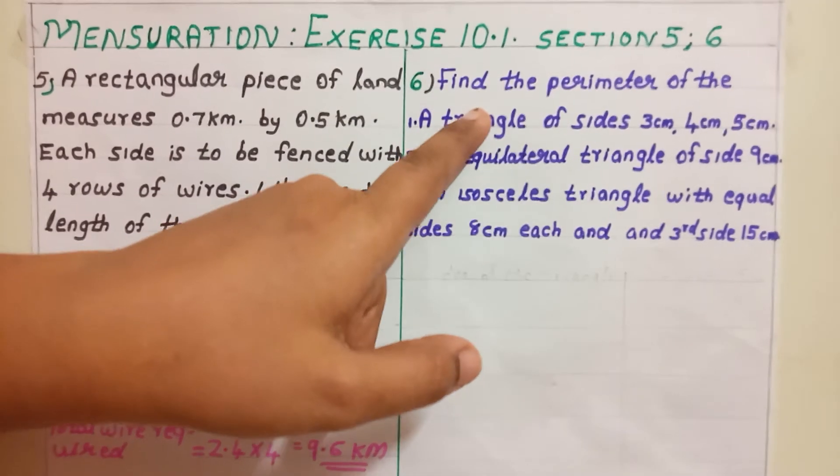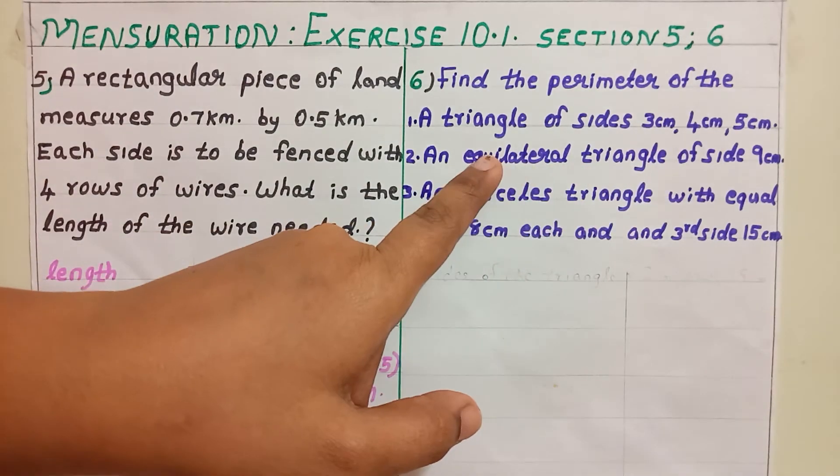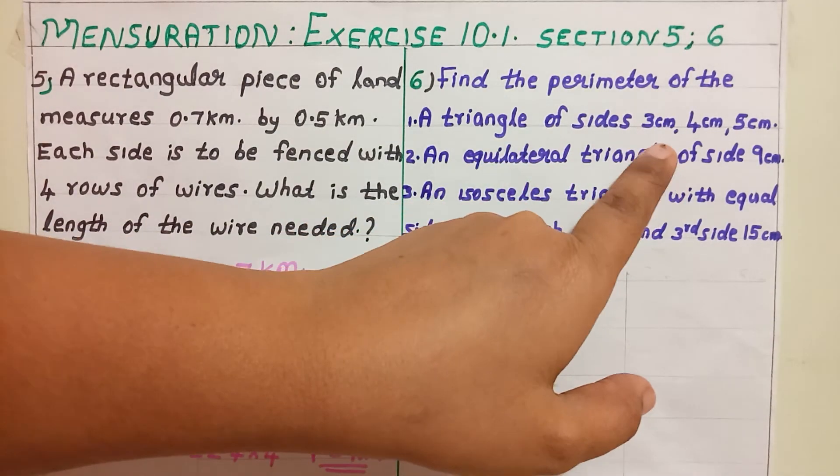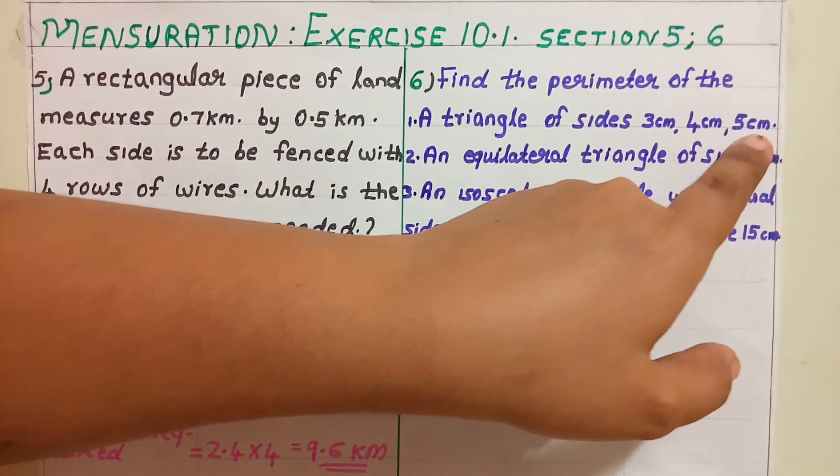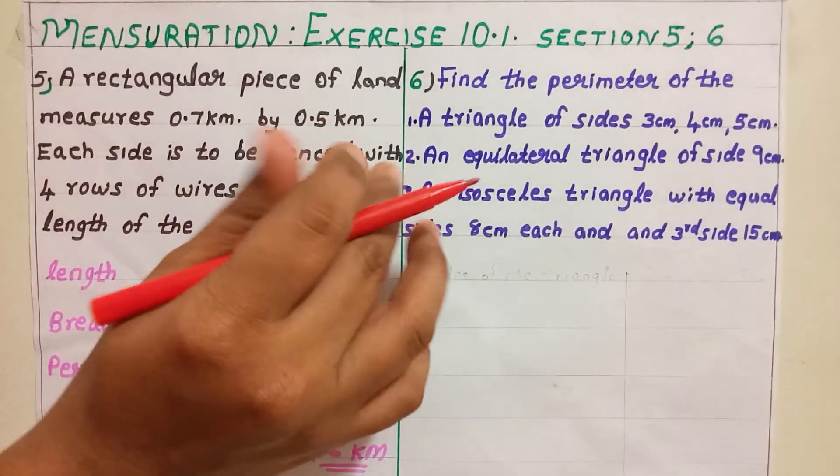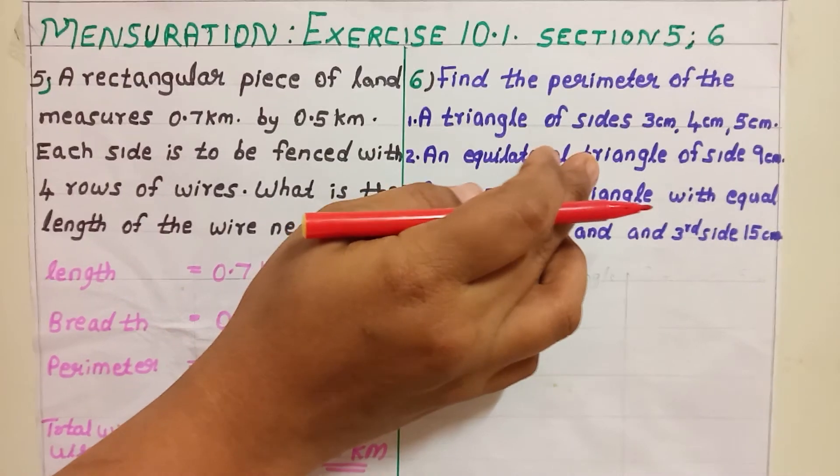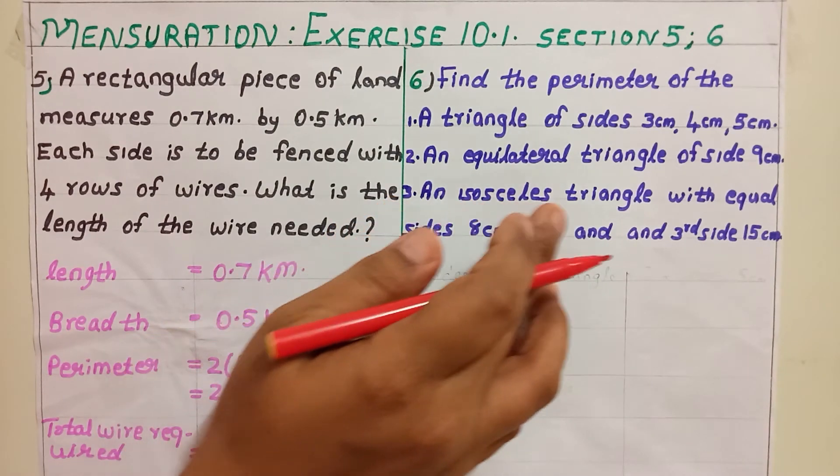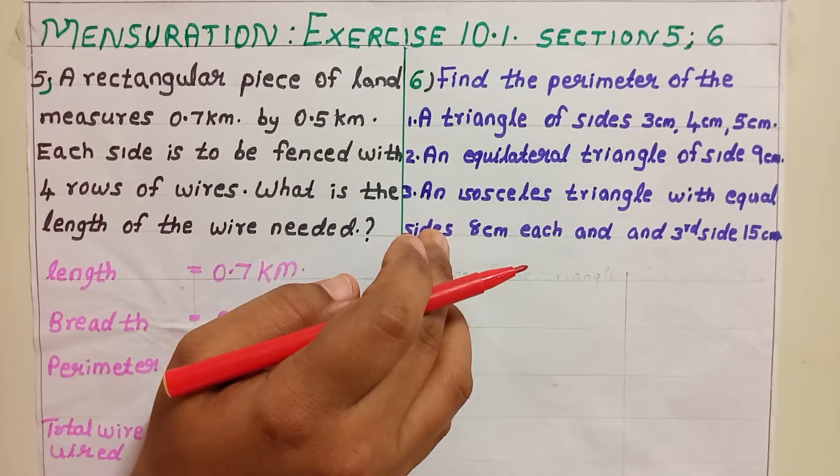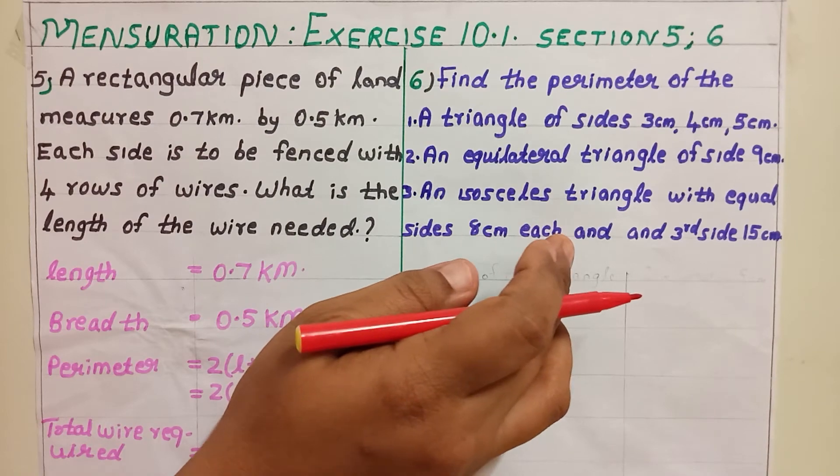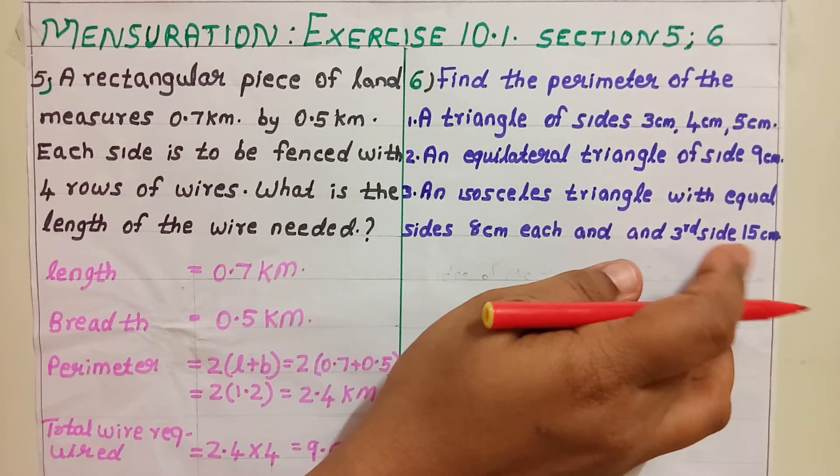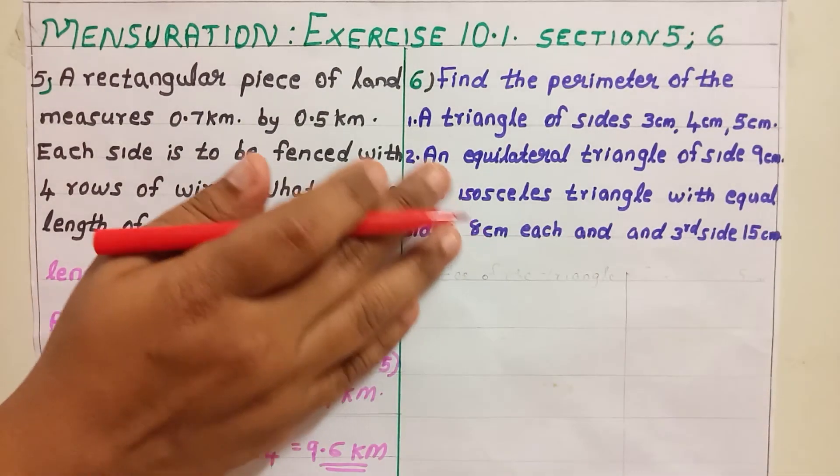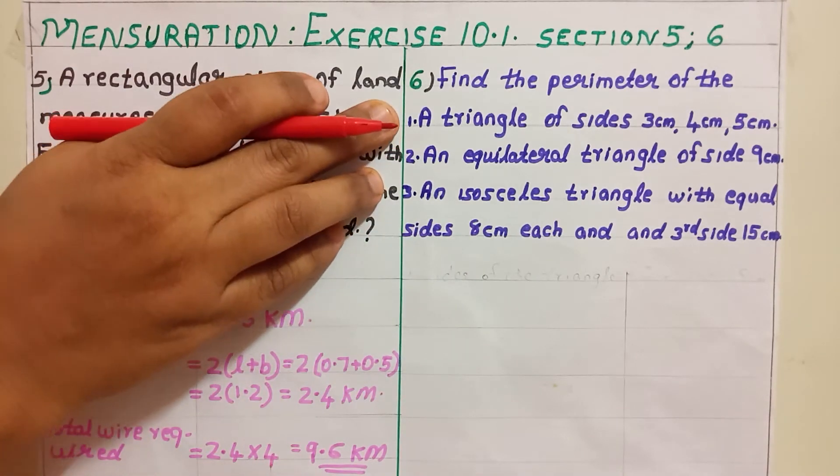Next problem is Find the perimeter of a triangle of sides 3 centimeter, 4 centimeter, 5 centimeter. Then, next question: An equilateral triangle of sides 9 centimeter. Then, third question: An isosceles triangle with equal sides 8 centimeter each and the third side is 15 centimeter. This is our question. Now, we can start the first one.